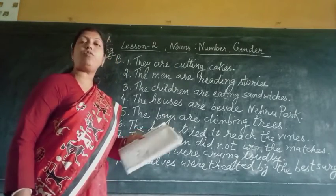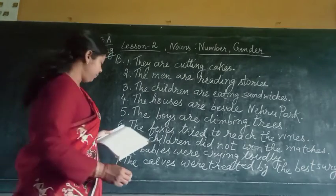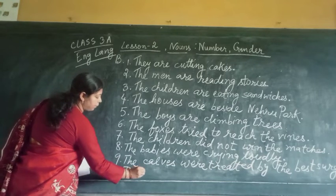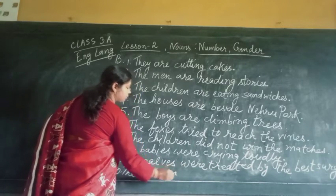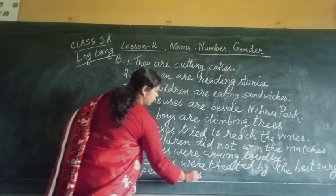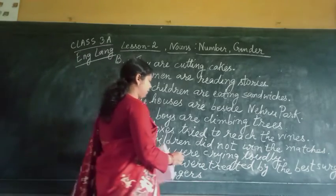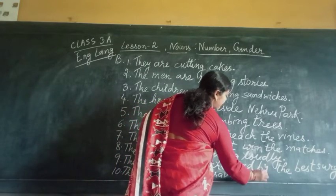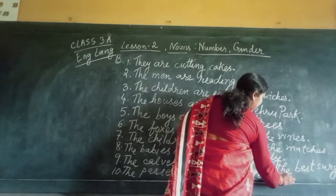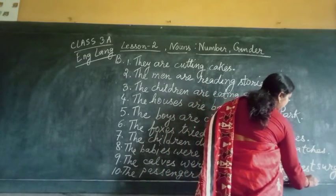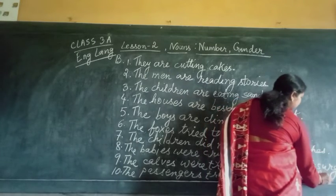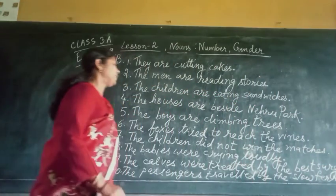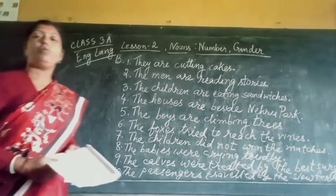Number 10: The passenger travelled by the slow ferry. The answer is: The passengers travelled by the slow ferries.